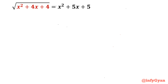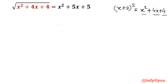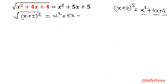I can see this square root of x² + 4x + 4. I can see it is the whole square of (x + 2). Just open (x + 2)²: x² + 4x + 4, using a² + 2ab + b², so 2 times x times 2 gives 4x, and 2² is 4. So I will write this as √((x+2)²) = x² + 5x + 5.